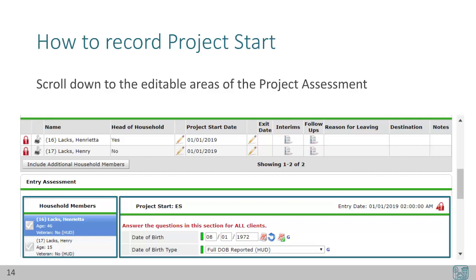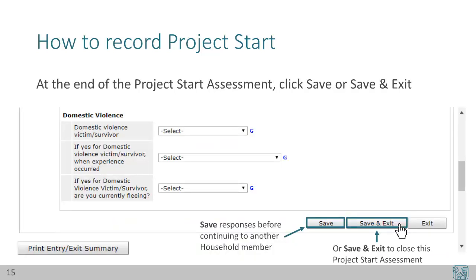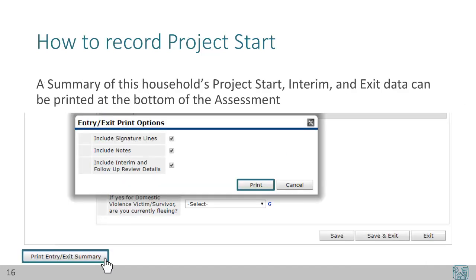On the left-hand side, the household members are listed in a menu format. You can switch between household members here to record the responses for all clients. The current client selected will be blue. In the center, the project start assessment with questions is listed. The header for this box will identify the name of the assessment that is available. The assessment here is called Project Start ES, which stands for Emergency Shelter. The project start date, labeled as the entry date, will be to the right of the header. At the end of the project start assessment, click Save or Save and Exit. Save responses before continuing to another household member. Click Save and Exit to close this project start assessment. A summary of this household's project start, interim, and exit data can be printed at the bottom of this assessment.